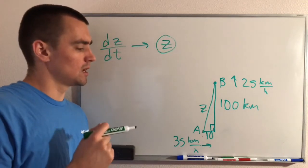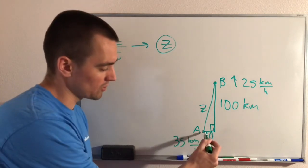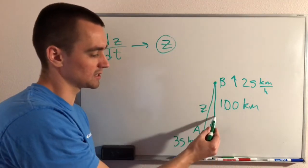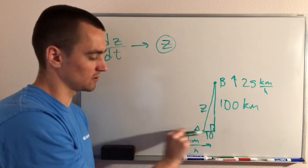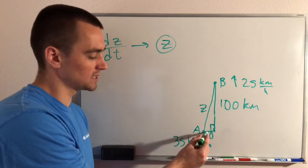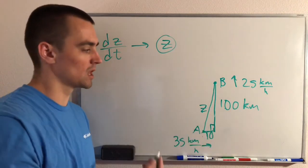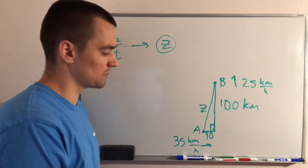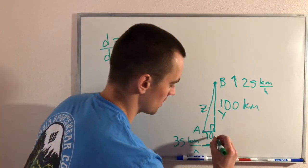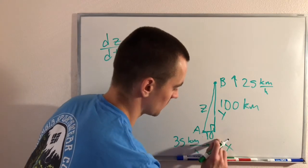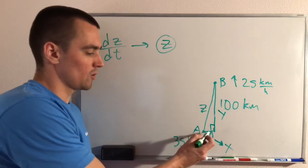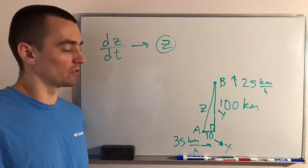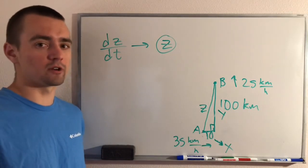Going back to our drawing, both of the other two sides are changing. As ship B sails north, that length gets longer, and as ship A sails east, that side length gets shorter. So we want to associate a variable to each of those sides as well. Let's call the vertical side Y and the horizontal side X. We need variables for those sides because they're changing over time; if they were constant, we would not need to do that.